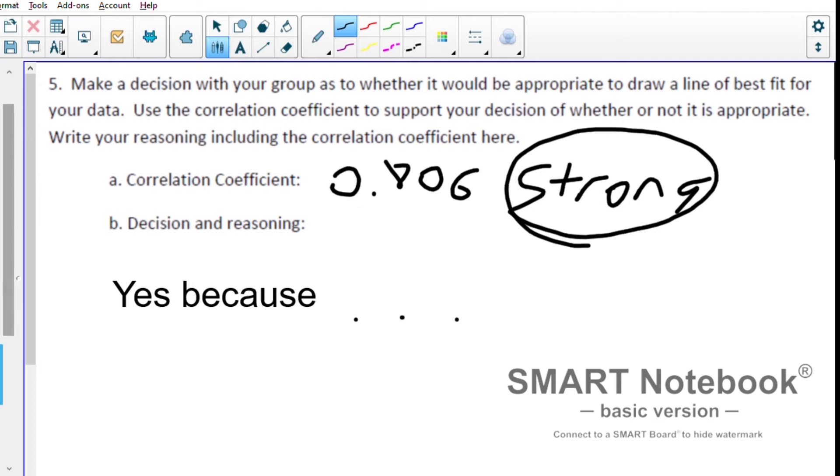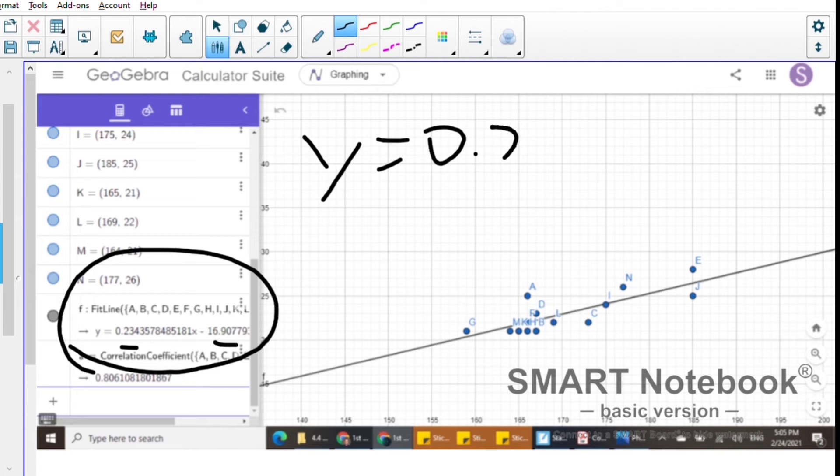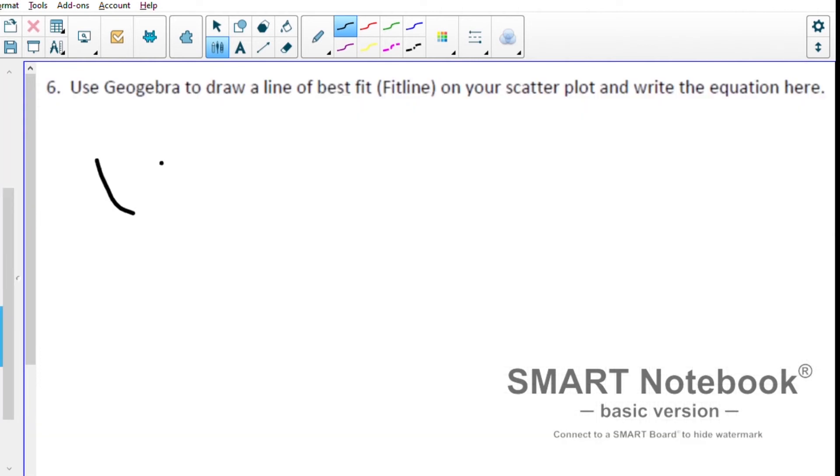Question number six asks us to write the equation for a line of best fit. We can see down here at the bottom when we did our command for fit line that gave us our equation. We'll round the slope to the nearest hundredth and the y-intercept to the nearest integer. So that would be y equals 0.23x minus 17.